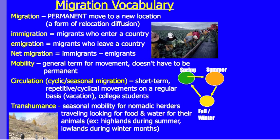Transhumance is a form of cyclical seasonal mobility. This is when nomadic herders travel with their animals — sheep, goats, or camels — looking for food and water. They typically go to the highlands during summer when it's not too cold and let animals graze there, then move down to the lowlands during winter months where there's grass.